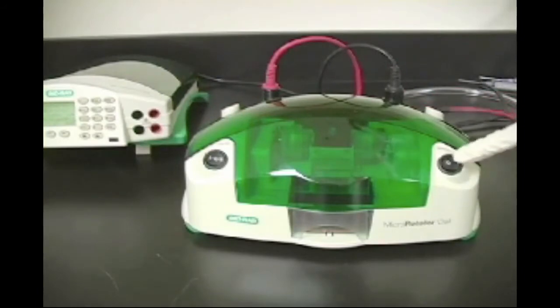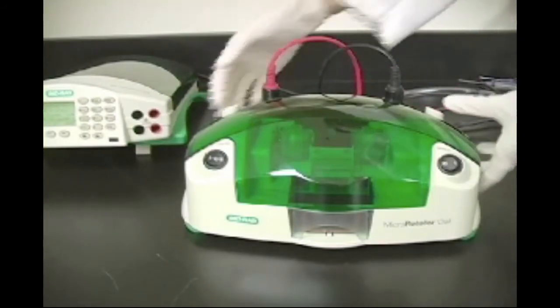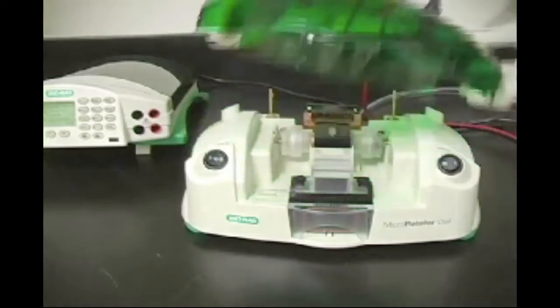When the run is complete, turn the power supply off and disconnect it from the microrotophore cell. Turn off the power to the oscillating motor and cooling block and remove the lid.